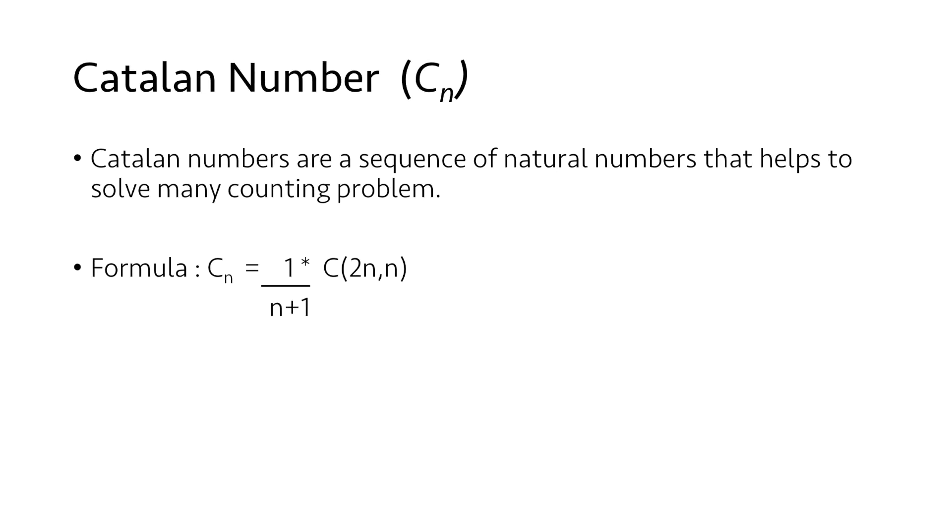The formula for Catalan number is 1 upon n plus 1 into binomial coefficient of 2n, n.